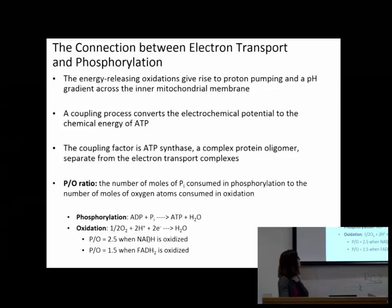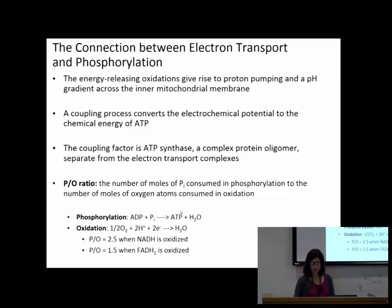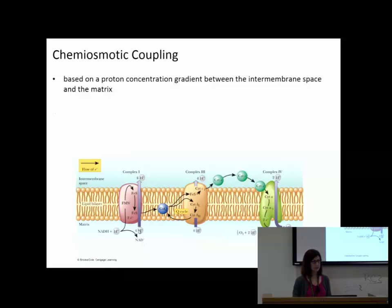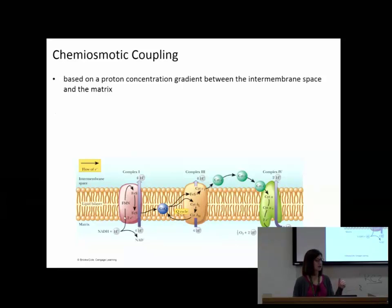For every one NADH, protons pumped are 4-4-2. Remember, the electrons are the ones flowing through the complexes - the things that are pumped are protons. Think of it this way: electrons flow through the wire, the wire is our membrane. The protons are passing over the wire.